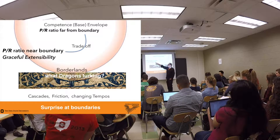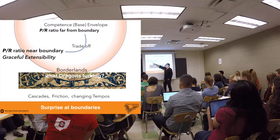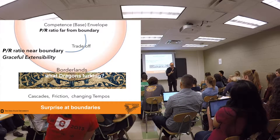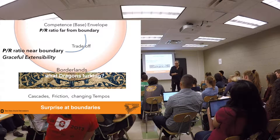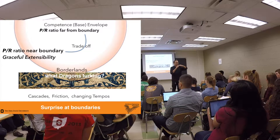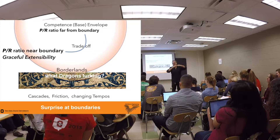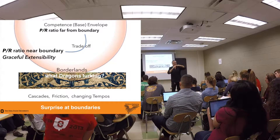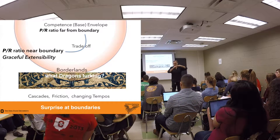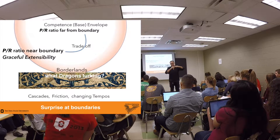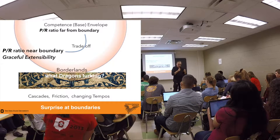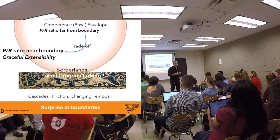So I have two things: graceful extensibility and competence envelope. Where does this coinage come from? Very simply from two terms. Graceful degradation — a brittle thing versus gracefully degrading. Brittle means a rapid fall-off at the boundary; gracefully degrading means slowly falling off. Most machines are brittle — they fail rapidly at the boundaries. Human systems and biological systems tend to fail gracefully at the boundaries.